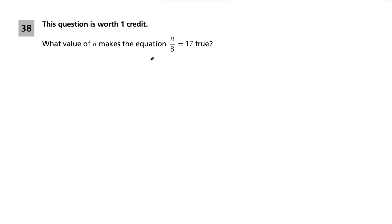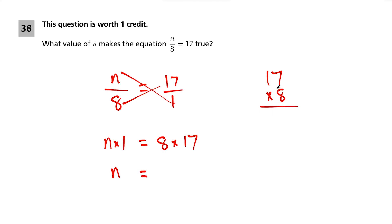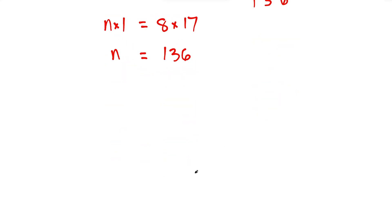Question 38: what value of N makes N/8 = 17 true? Rewrite as N/8 = 17/1, then cross multiply: N times 1 equals 8 times 17. We calculate 8 times 17: 8 × 7 is 56, carry 5; 8 × 1 is 8 plus 5 is 13. So N equals 136. That is our solution.